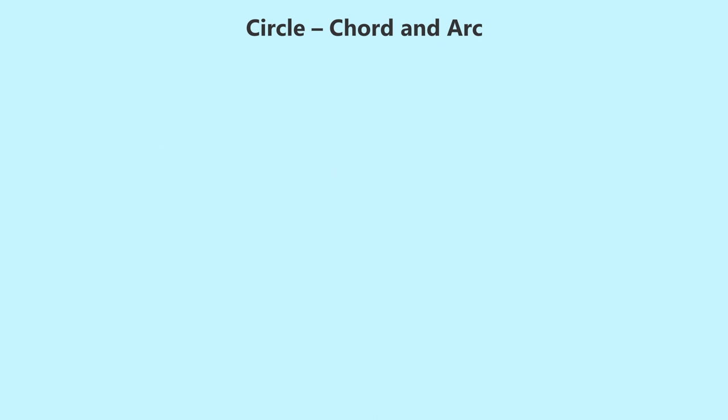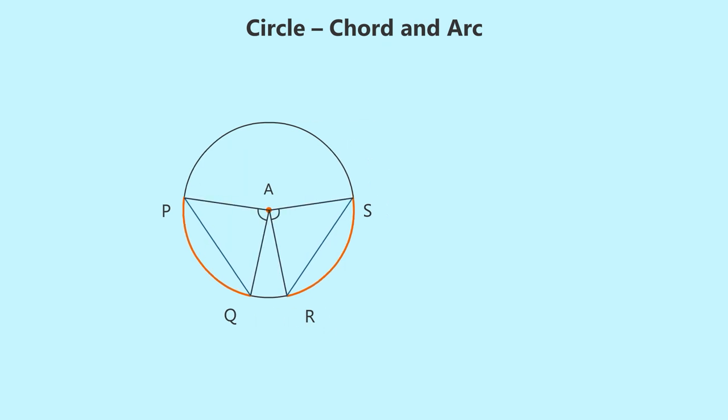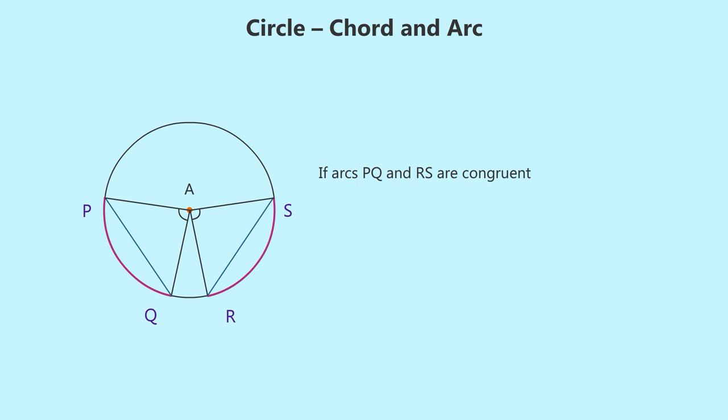Now let us turn our attention to arcs of the circle. Consider minor arcs PQ and RS of the circle. We say these two arcs are congruent if their measures are equal, that is, if angle PAQ and angle RAS have equal measures. A question for you: if arcs PQ and RS are congruent, what can we say about the lengths of chords PQ and RS?